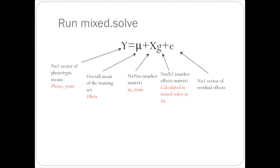The g value is the marker effects matrix, and this is what we're solving for in ridge regression. This is calculated in mix.solve as the dollar sign u.